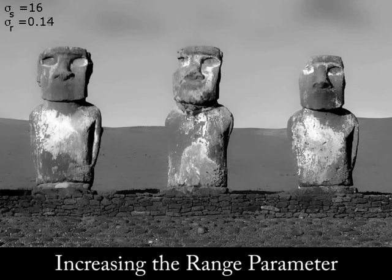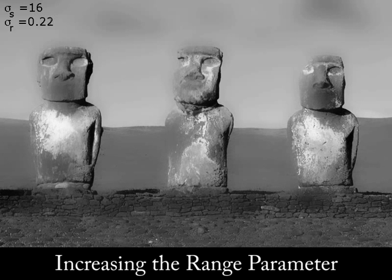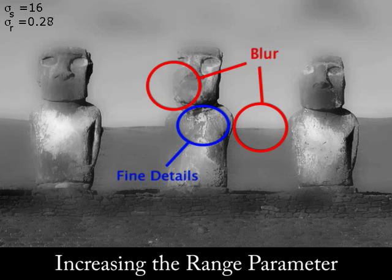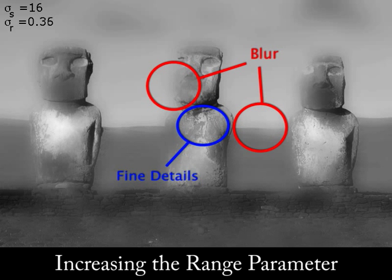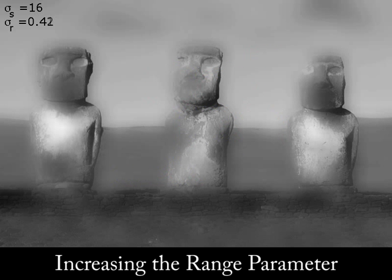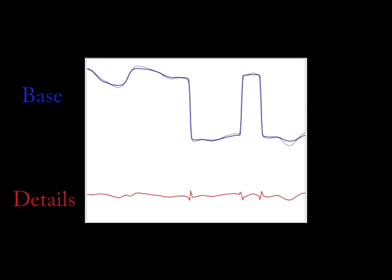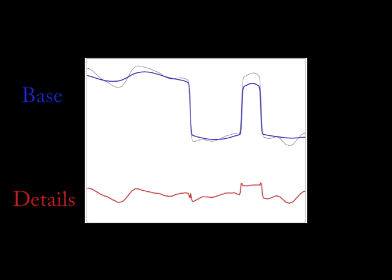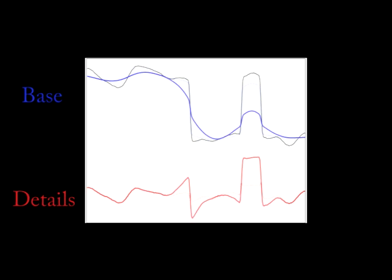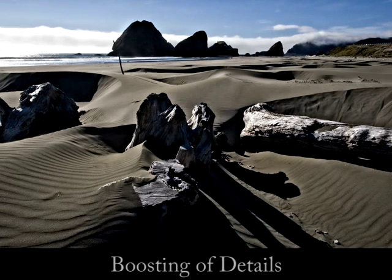To achieve a more aggressive smoothing, it is necessary to increase the range parameter sigma r as well, but this ultimately causes even some of the stronger edges to become blurry, and yet some small-scale details still remain unfiltered. In the limit, increasing sigma r makes the bilateral filter behave like a linear filter. To summarize, in order to produce progressively coarser images, the bilateral filter tends to blur some of the edges that it is supposed to preserve, introducing ringing into the detail layer, which can cause halo artifacts to appear when the details are boosted.